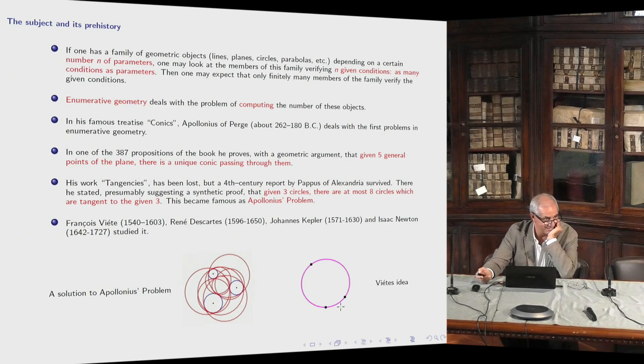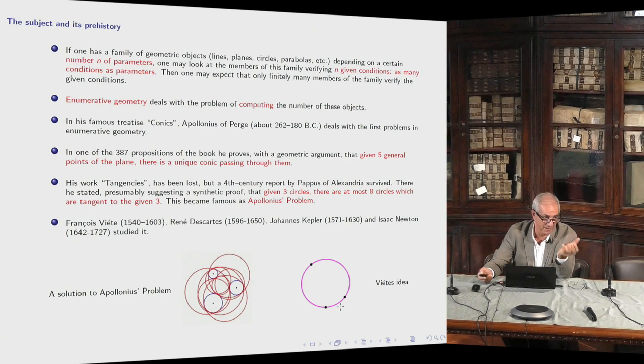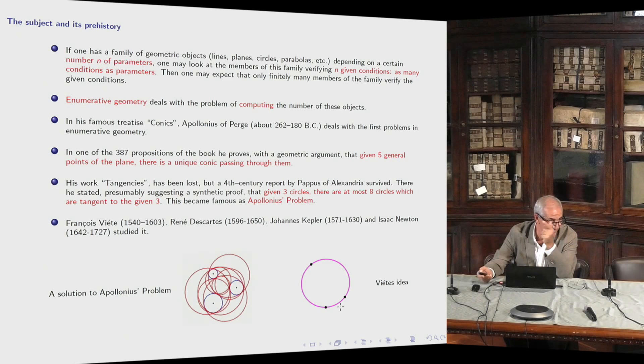Here you see a picture, and there is another picture due to Viète much later. Instead of taking three circles, you take three circles with radius zero — which means three points — and look at how many circles are tangent to these zero-radius circles. The only way of being tangent is to pass through the points, so you see only one. But each point counts for two solutions. So it's two times two times two, which is eight.